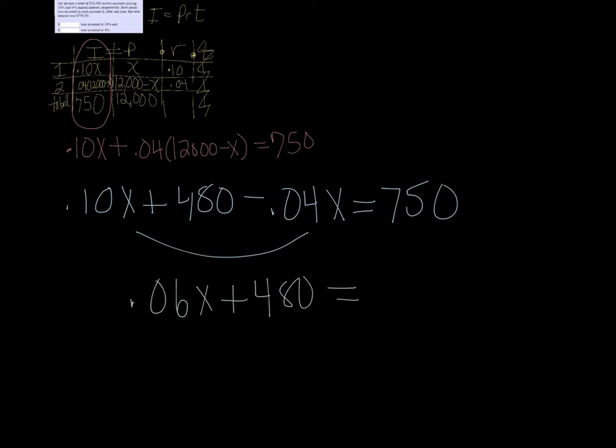And then subtracting 480 from 750 is 270. So .06x equals 270. Divide both sides by .06 and I get that x is 4500.